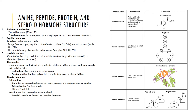Hormones can be amine, peptide, protein, or steroid in their structure. Amino acid derivatives are hormones derived from a single amino acid, such as the thyroid hormones thyroxine and triiodothyronine. Peptide hormones are short chains of amino acids — an example is antidiuretic hormone, composed of nine amino acids. Proteins are long chains of amino acids or polypeptides; you can have small proteins like insulin, which is composed of 51 amino acids, or glycoproteins like thyroid stimulating hormone.